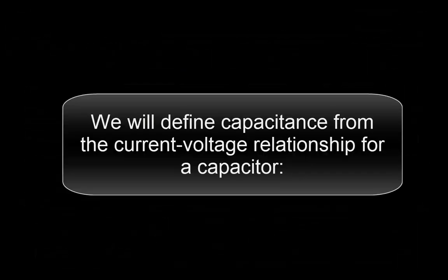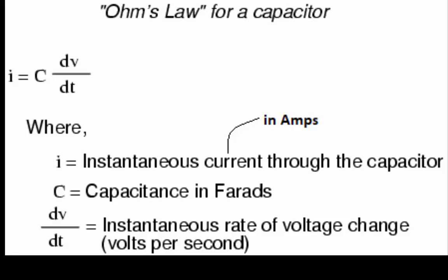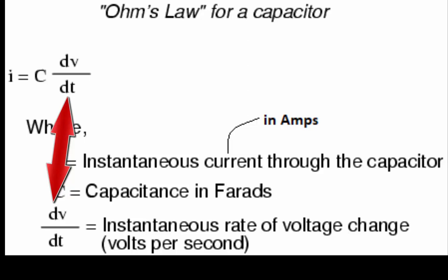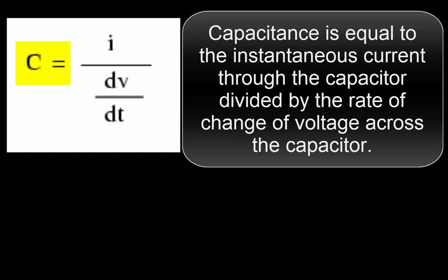We will define capacitance from the current voltage relationship for a capacitor. This formula shows that the current is equal to the capacitance multiplied by the rate of change of voltage. Solving this formula for capacitance, the capacitance is equal to the instantaneous current through the capacitor divided by the rate of change of voltage across the capacitor.